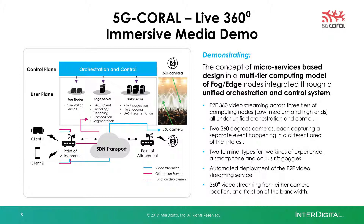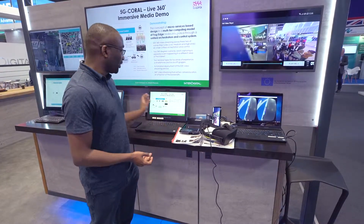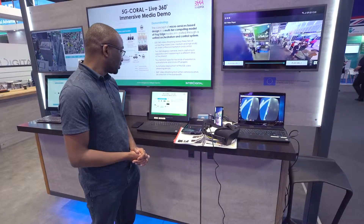On the fog node we run the lightweight services such as the orientation service. The benefits of having this hierarchical tier of compute include reduced cost of deployment, a unified orchestration across all three tiers of compute, and reduced bandwidth due to leveraging the orientation service.